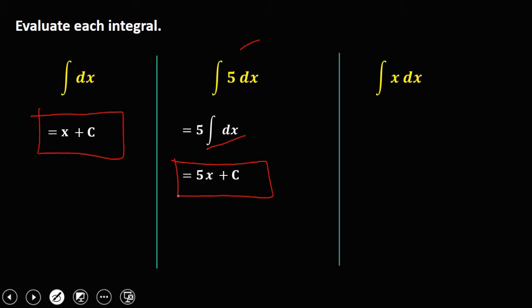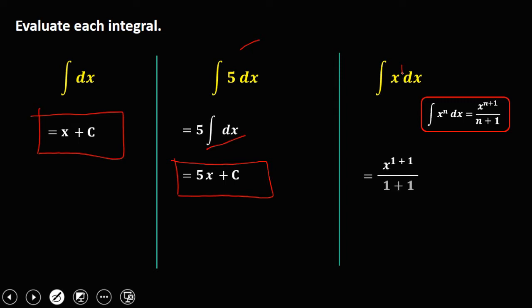For the integral of x dx, using this formula, we add 1 to the exponent. Since x has exponent 1, the integral is x to the power 1 plus 1 over 1 plus 1, plus C. Simplifying, 1 plus 1 is 2, so the result is x squared over 2, plus C.